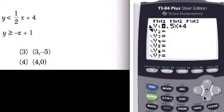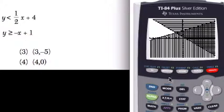So the upper region is now shaded. So y is greater than or equal to negative x, so negative x plus 1. Enter. And we graph.